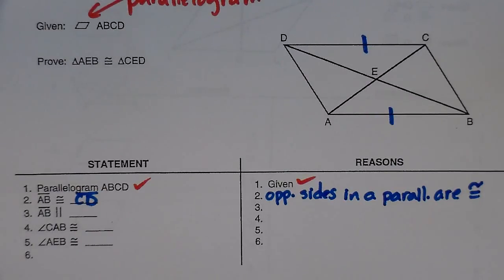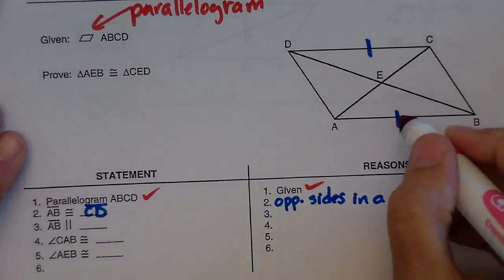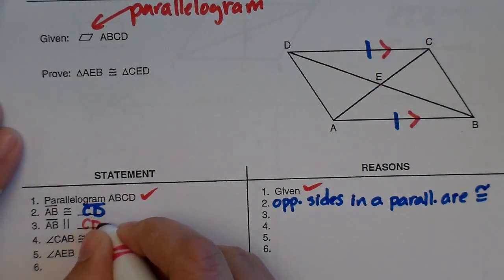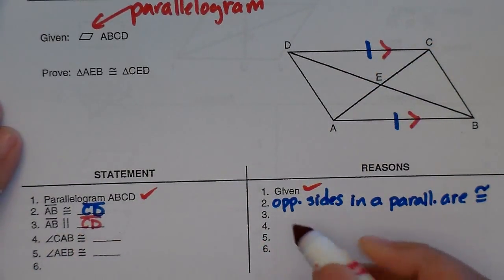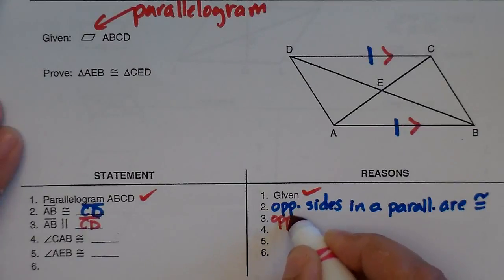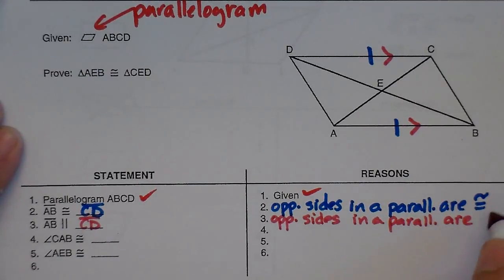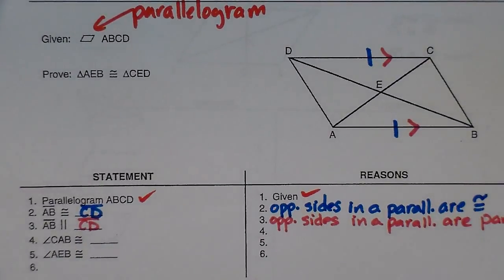Well, the next one says, what is AB parallel to? Well, AB is parallel to CD. How do I know that? Well, again, because of the parallelogram. Opposite sides in a parallelogram are parallel. And you can actually, for this one, write definition of a parallelogram. Real simple.